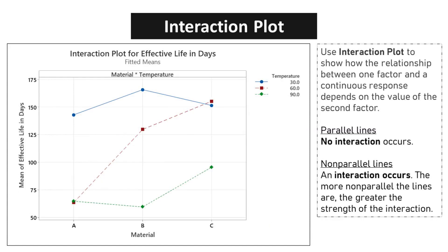Use Interaction Plot to show how the relationship between one factor and a continuous response depends on the value of the second factor. No interaction occurs if the interaction plot is parallel lines. On the other hand, interaction occurs if non-parallel lines exist. The more non-parallel the lines are, the greater the strength of the interaction.